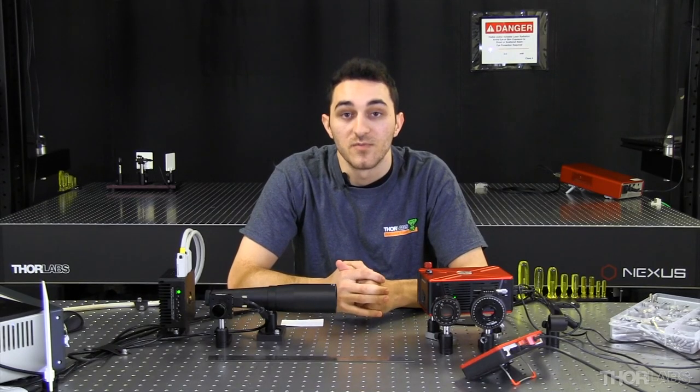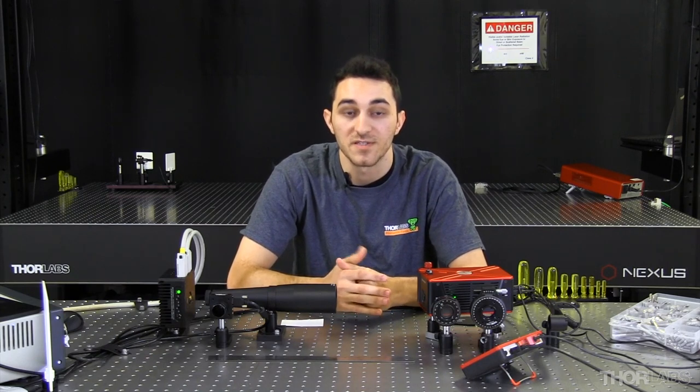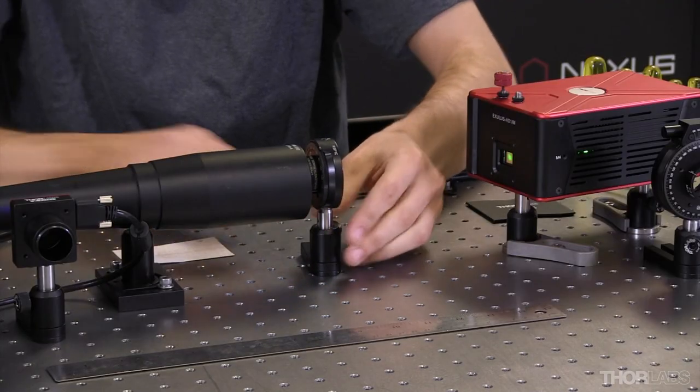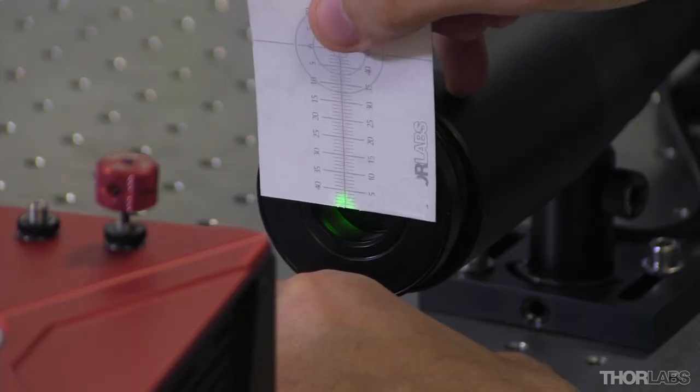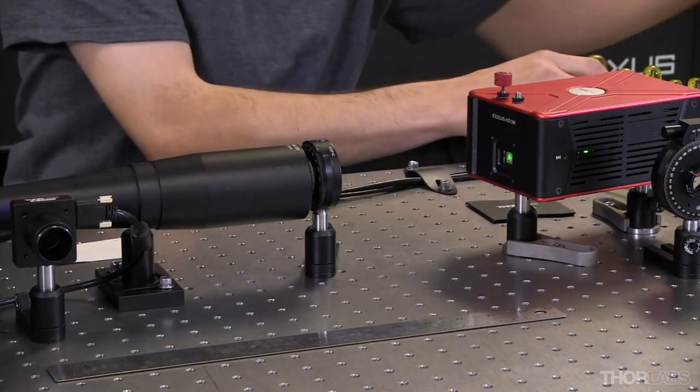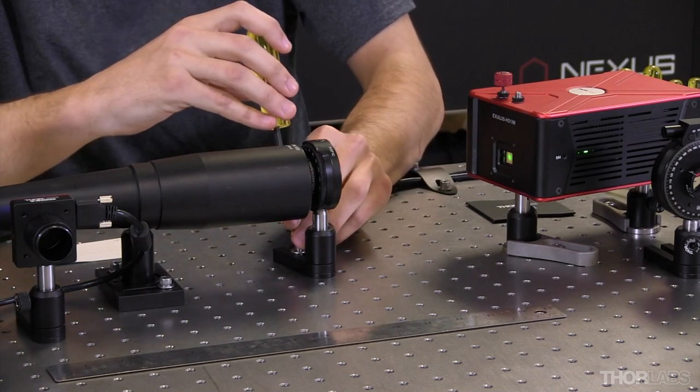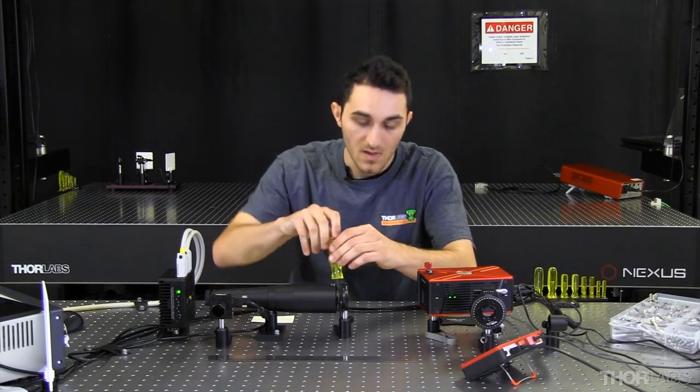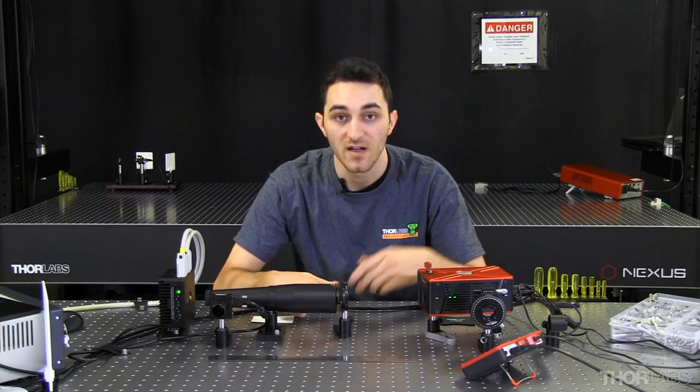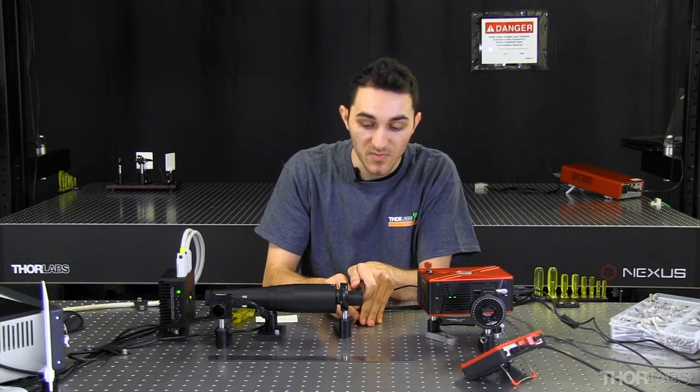Next, I'm going to improve the polarization extinction ratio of the light incident on the SLM by adding a linear polarizer. I want to align the transmission axis of this polarizer with the polarization state of the laser. I can do this by rotating the polarizer until it transmits maximum power.